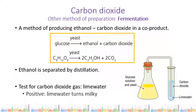The other preparation method on the syllabus is fermentation. You may have heard of this for producing ethanol — carbon dioxide is a co-product. Fermenting fruit containing glucose in the presence of yeast produces two molecules of ethanol and two molecules of carbon dioxide. The glucose is broken down into ethanol and CO2; the ethanol is then separated by distillation. The test for carbon dioxide is lime water: bubble the gas through lime water and a positive result — confirming CO2 — is the lime water turning milky.